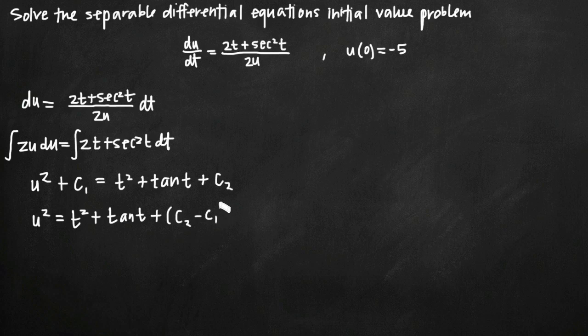Now c₂ - c₁ represents a single constant. We only need to solve for one constant using the initial condition u(0) = -5. So we replace c₂ - c₁ with just c. Now we have u² = t² + tan(t) + c. For this reason, sometimes people just add the constant of integration on the right side only, since you'll consolidate them anyway.